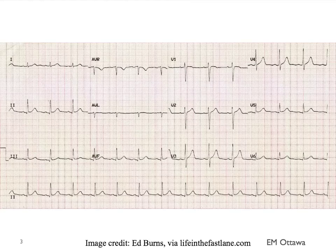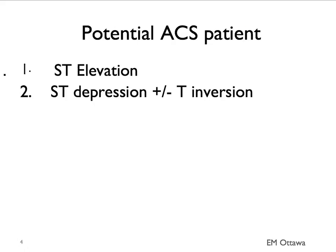This is a normal 12-lead ECG. When we're approaching a 12-lead ECG, we often start with rate, rhythm, axis, and so on. Once we make sure those are okay, we move on to more specific details. These specific details include ST elevation and ST depression with or without T-wave inversion.